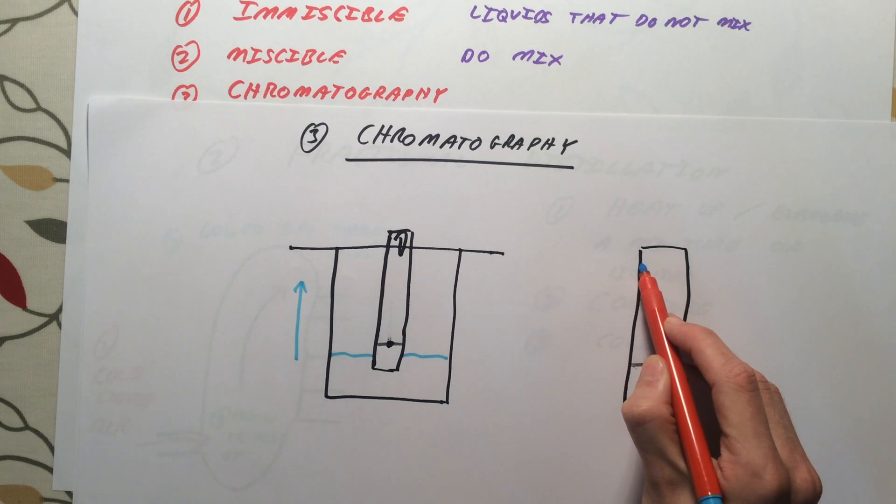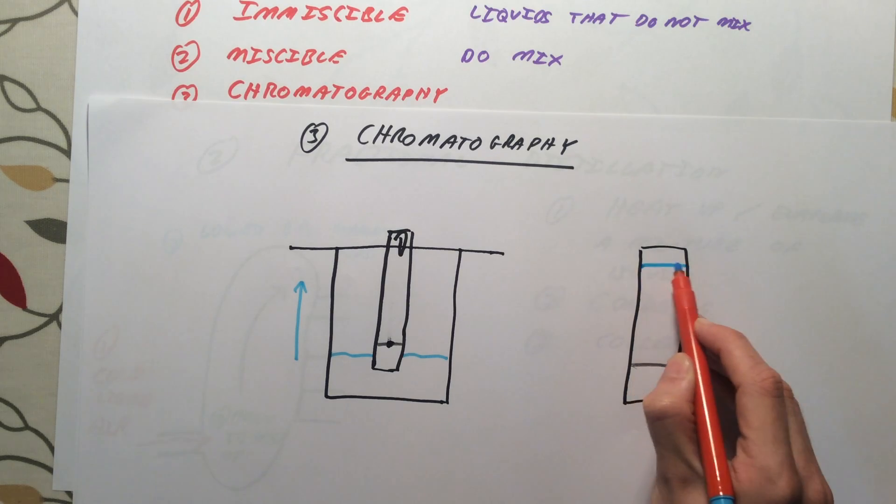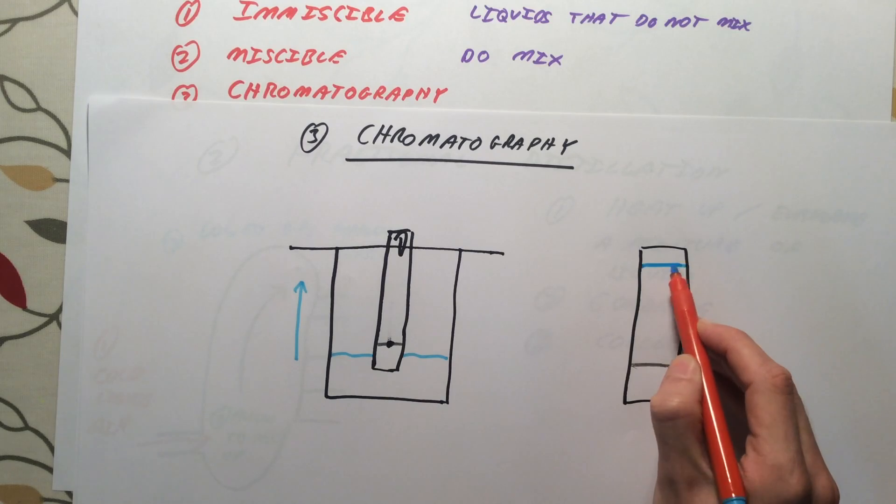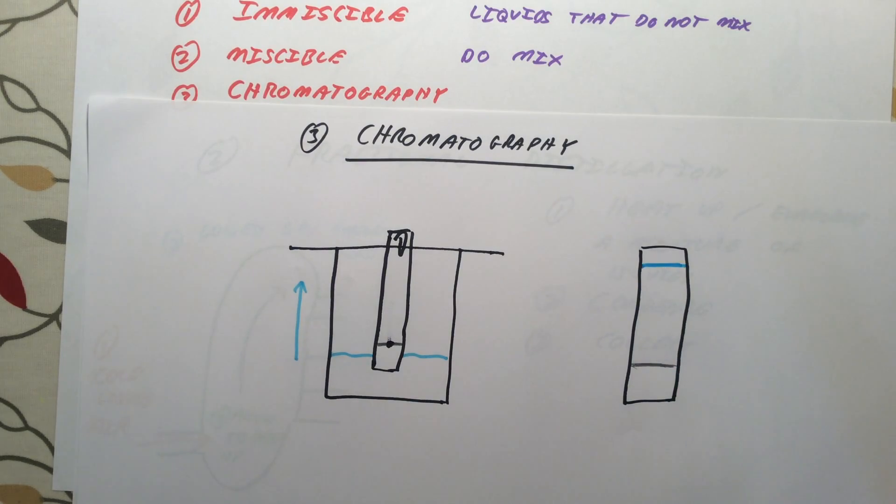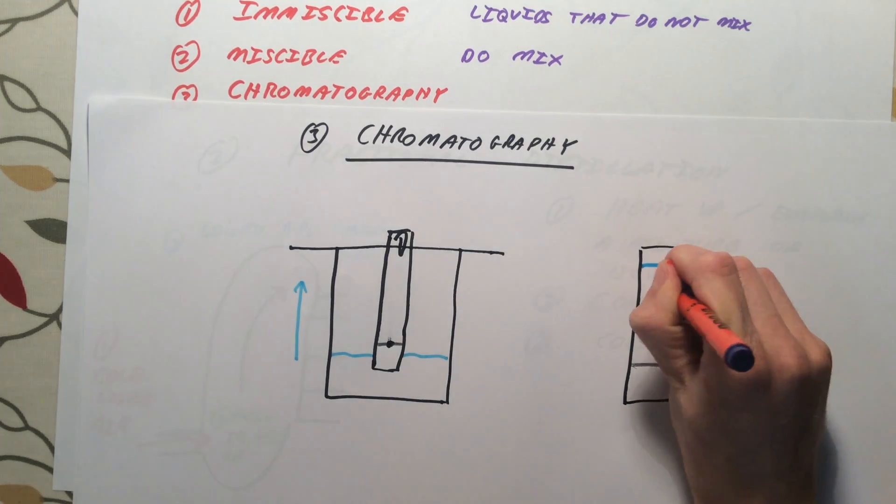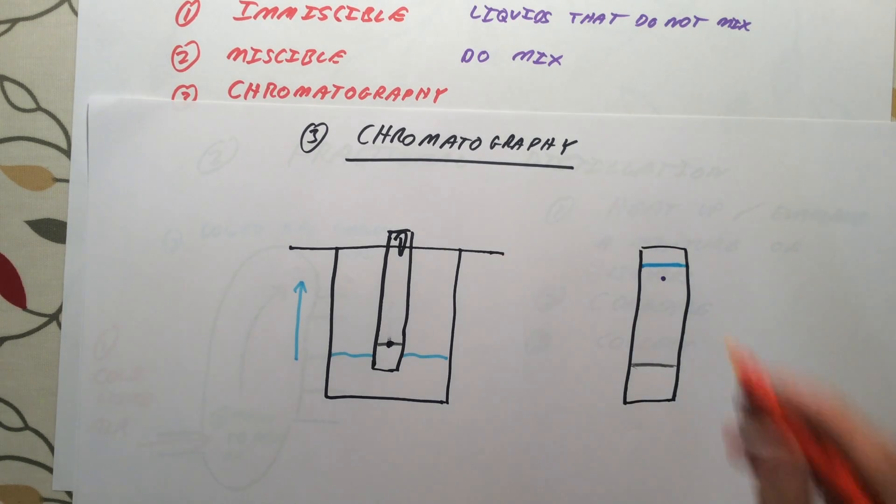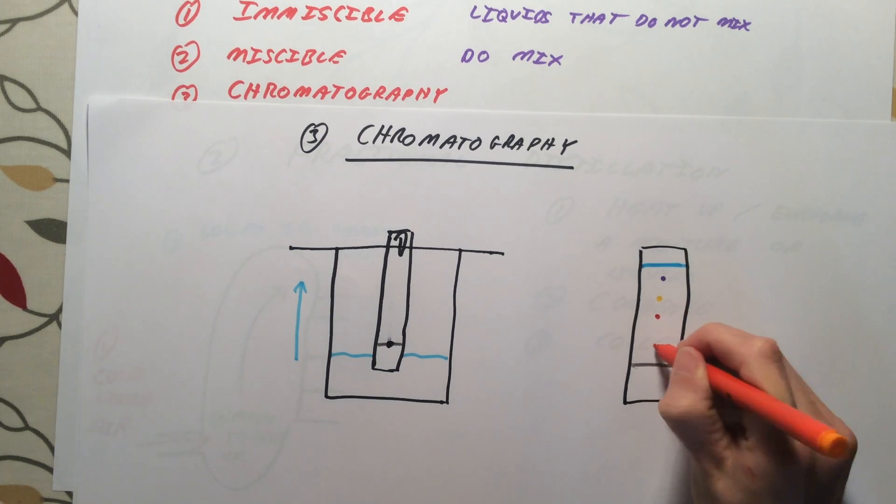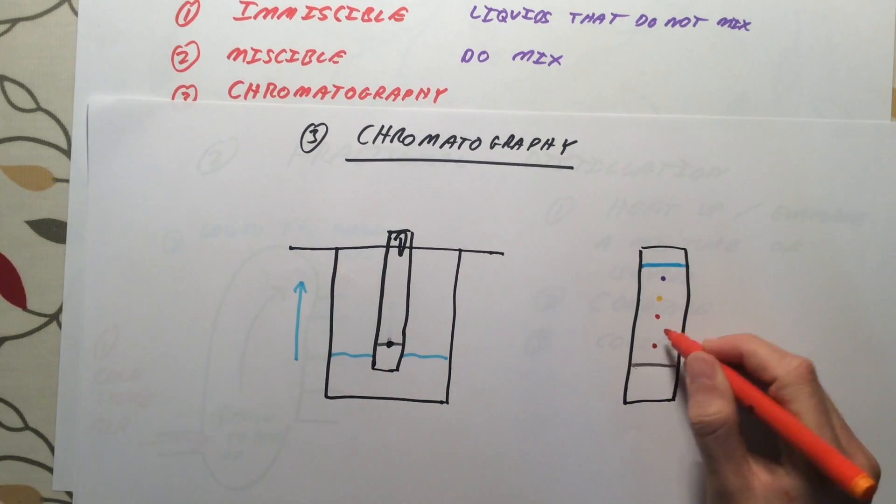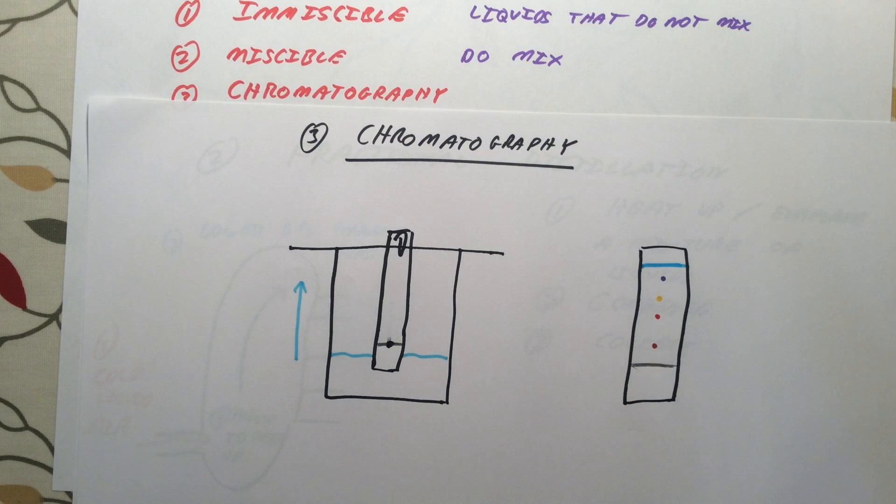We might end up with something that looks like this. First thing, I'm going to just say my water, my solvent rose to this point here. So, that is where the height that my water got to. And then I might, for example, have purple up here, a bit of yellow here, might have a bit of red here. Generally when you do this, it doesn't look anywhere near as nice as this, but this is the general idea.